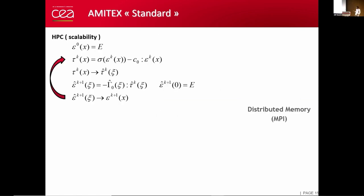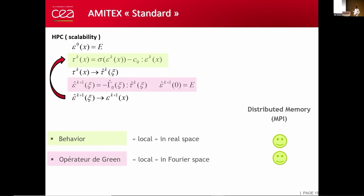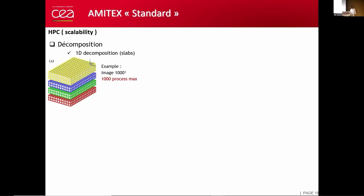For the HPC application, if we look at the algorithm, the definition of the polarization is purely local in space. We apply the behavior law. This is perfect for distributed memory. The Green operator is also local in Fourier space, so this is perfectly parallel. Finally, the only thing that is not local are the FFT and the inverse FFT, which are less suited for distributed memory.